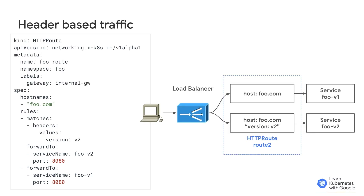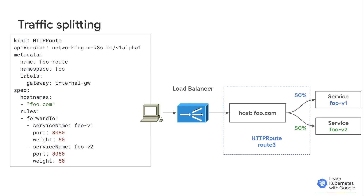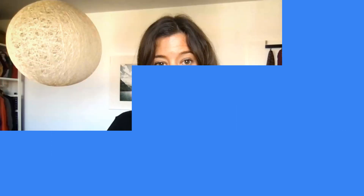And that's what we're going to do through header traffic matching, in which I can define where I want my application traffic to go based on HTTP headers. In this case, we'll send the traffic coming with the header version v2 to foo v2. And finally, let's try weight traffic splitting by sending 50% of the traffic to foo v1 and the other half to foo v2. You can use these three patterns, for example, for canary deployment, AB testing, and migrations.